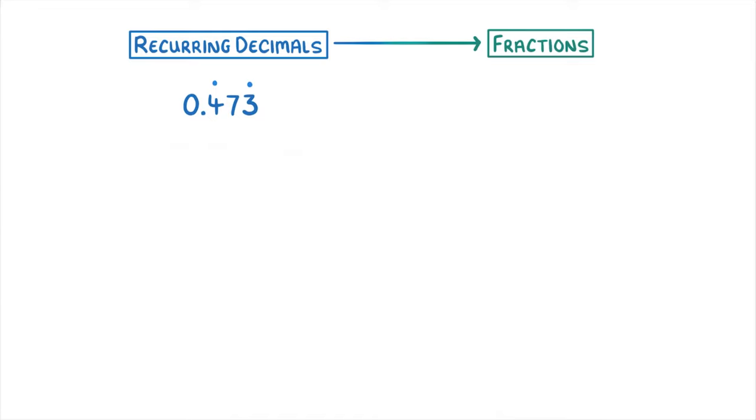So now we're happy with what recurring decimals are, let's have a go at this question here and convert it into a fraction. Before we start, I want to point out that converting recurring decimals into fractions is actually quite complicated and takes a fair few steps, so we're going to work through it slowly one step at a time.